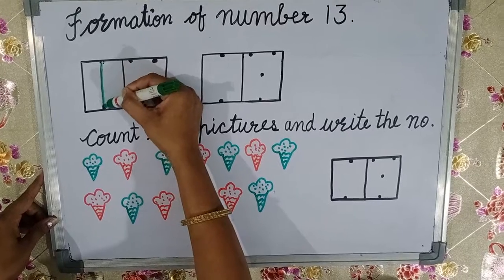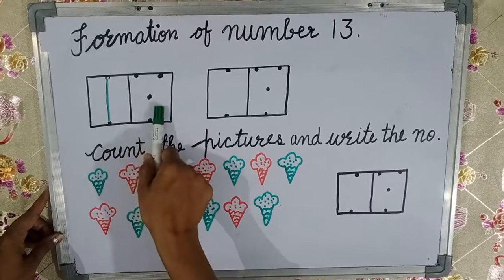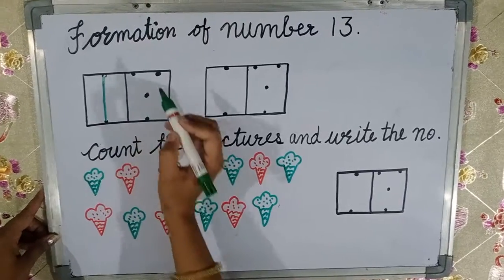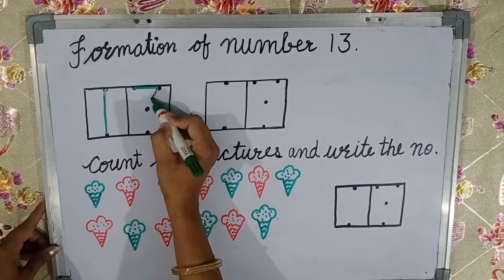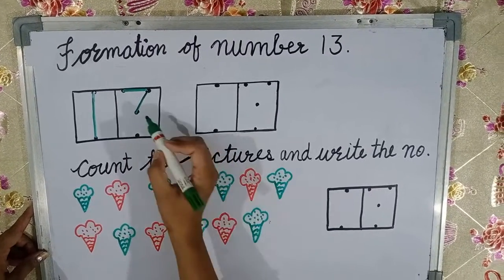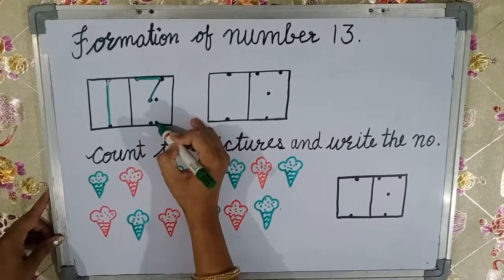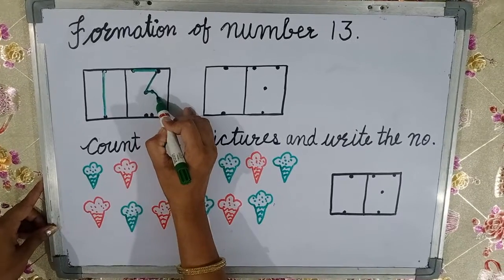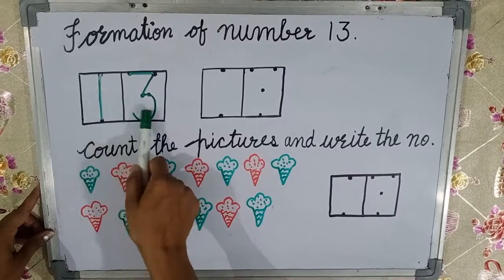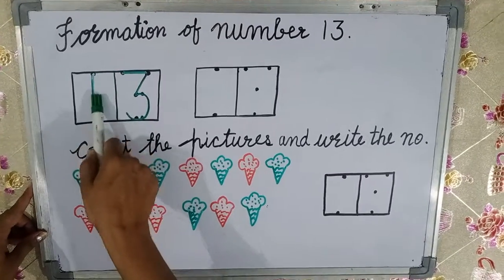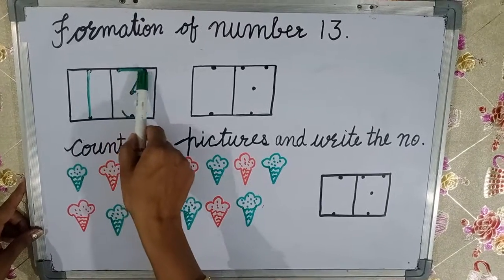This is our number one. Now for number three: make a sleeping line, then a slanting line. Put one dot here and one dot here, and make a curve. This is our number three.